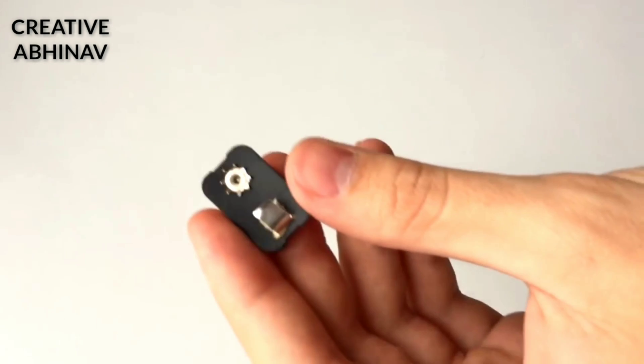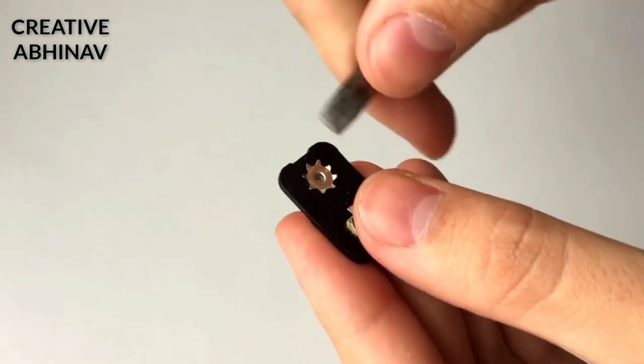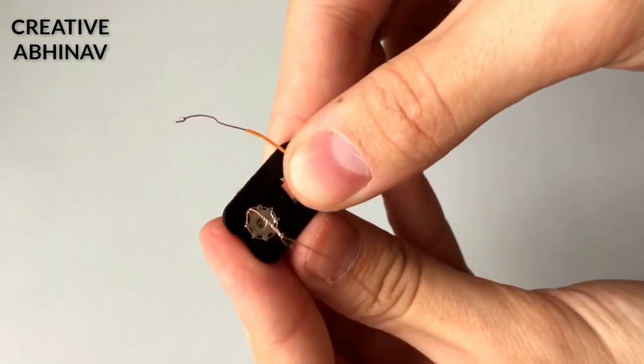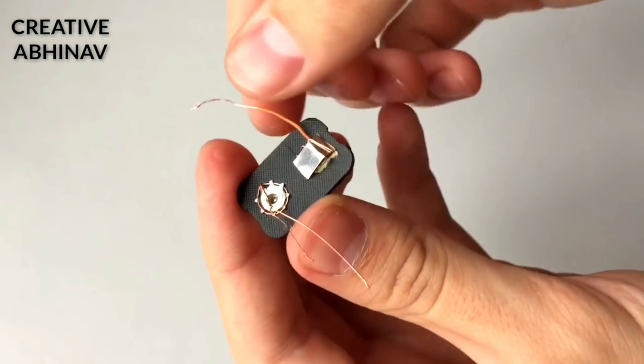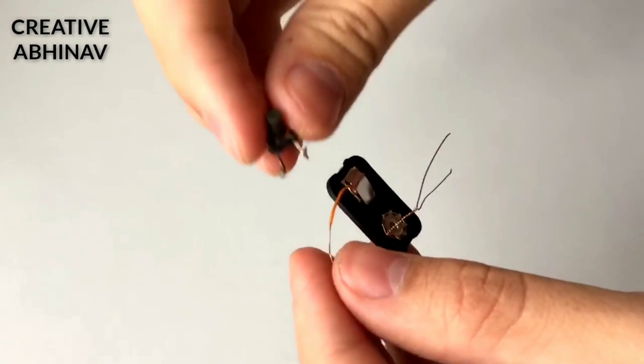Connect it on the 9-volt battery connector like this. Now take an on-off switch, then we have to connect it on the 9-volt battery connector.